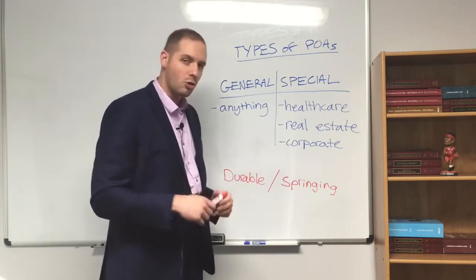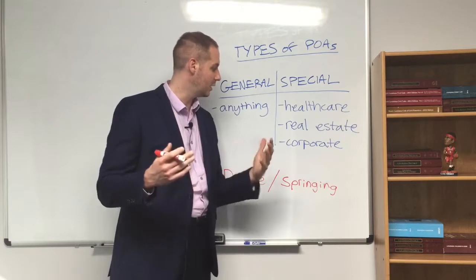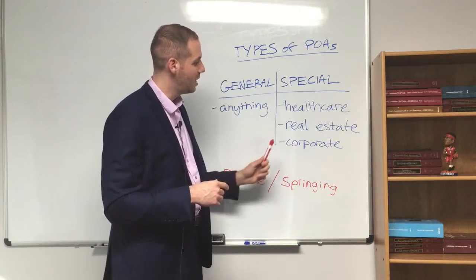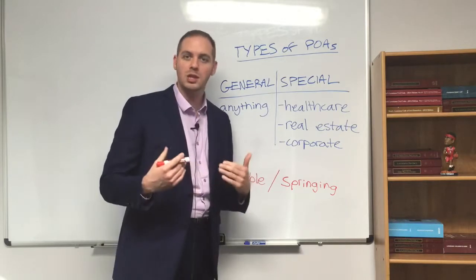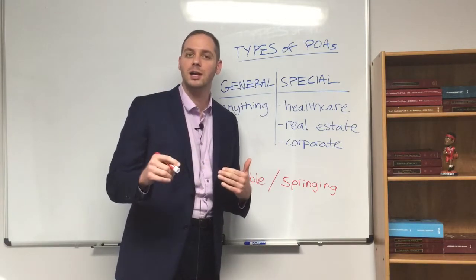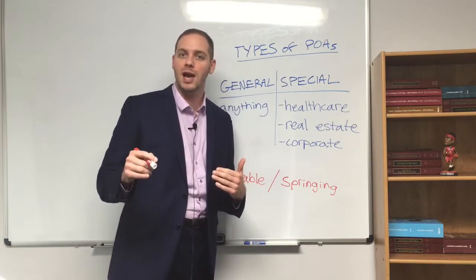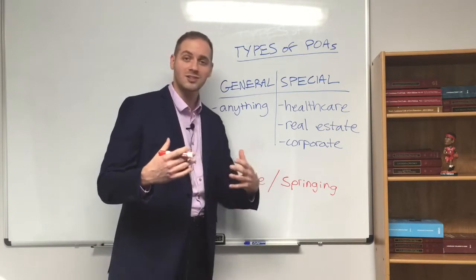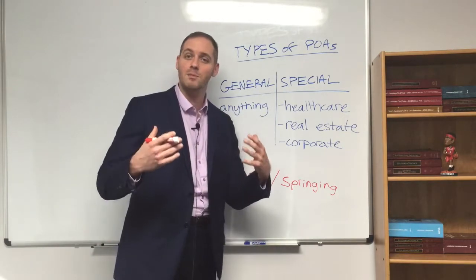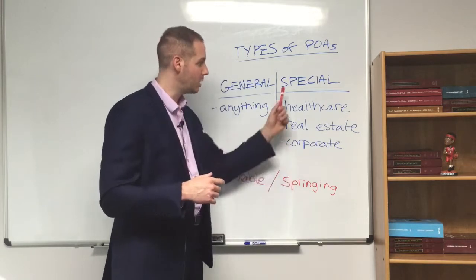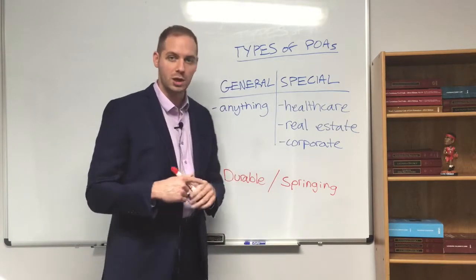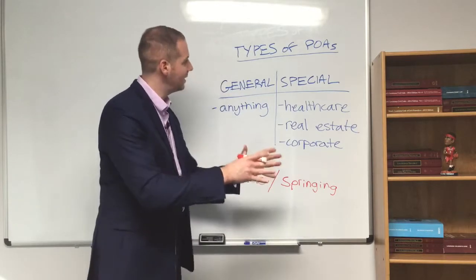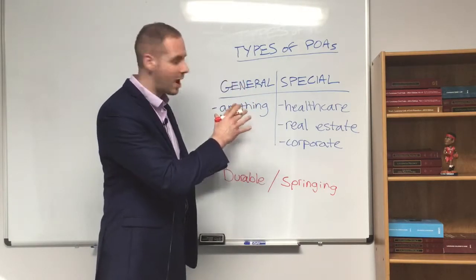Another example would be a corporate power of attorney. A lot of LLCs and corporations will need a special power of attorney that says X has authority — someone within the company has authority to sign and execute documents on behalf of the corporation. You've got to remember a corporation is just an entity, it's not a person. Someone within that company has to have the authority to make decisions on behalf of the corporation. So that's at least the general types of power of attorneys.